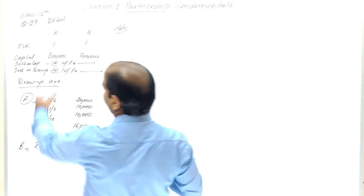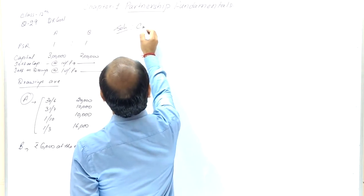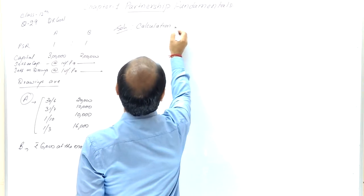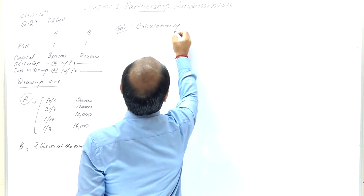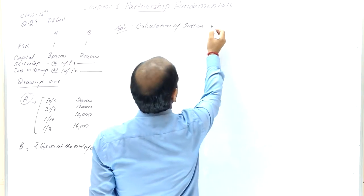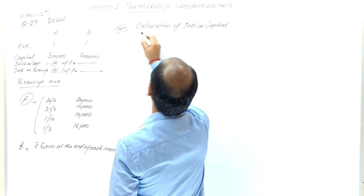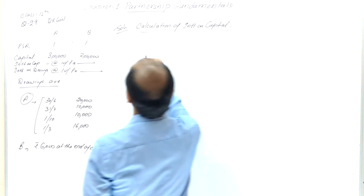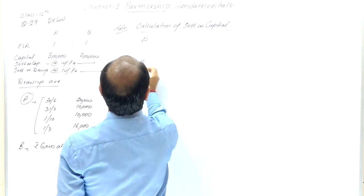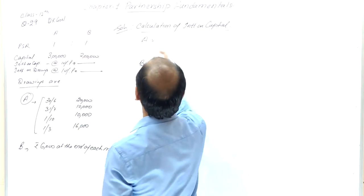Now let's start with the solution. First, calculation of interest on capital — the interest we need to show to partners on their capital. For A and B: A's capital is ₹3 lakh.